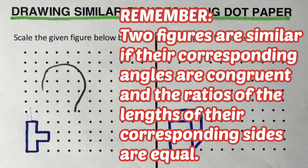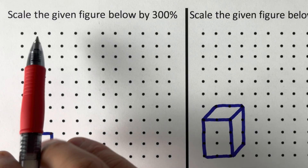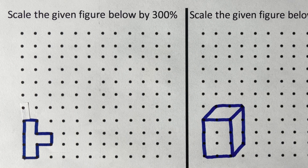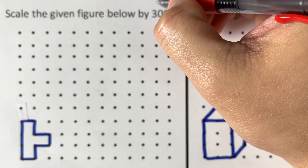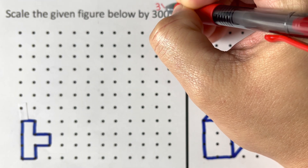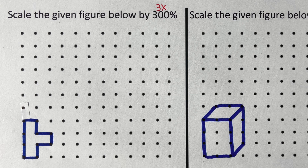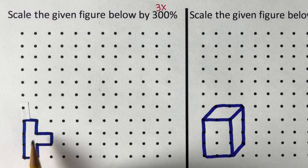Let's take this first example: scale the given figure below by 300 percent. If we say 300, we are supposed to enlarge or make a bigger picture that is three times the original. So 300 means three times. If we have 400, that would be four times bigger than the original, and 500 would be five times bigger than the original.